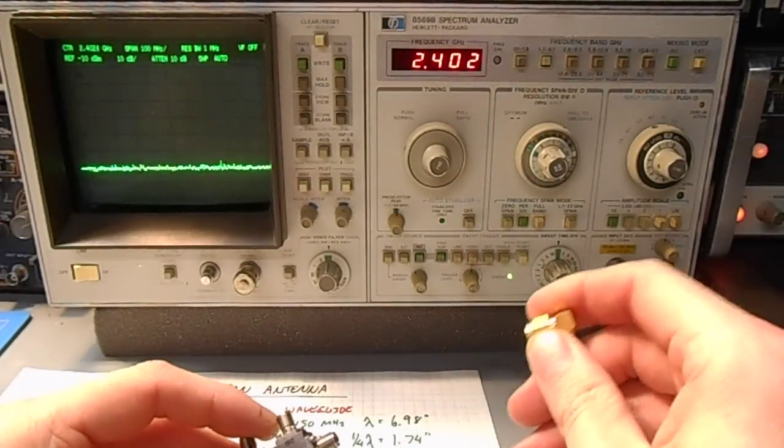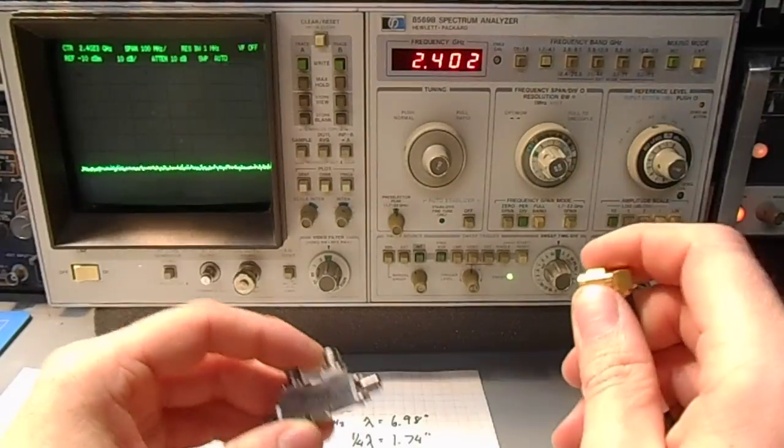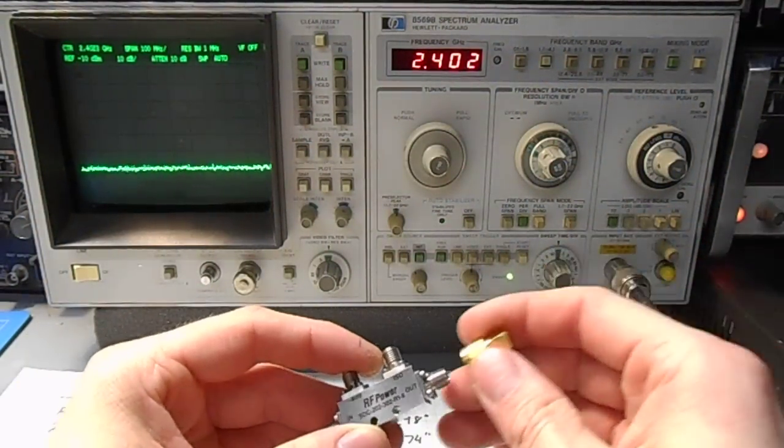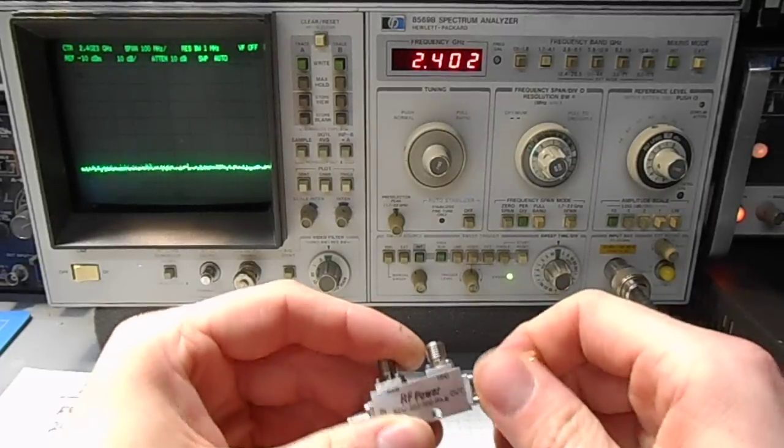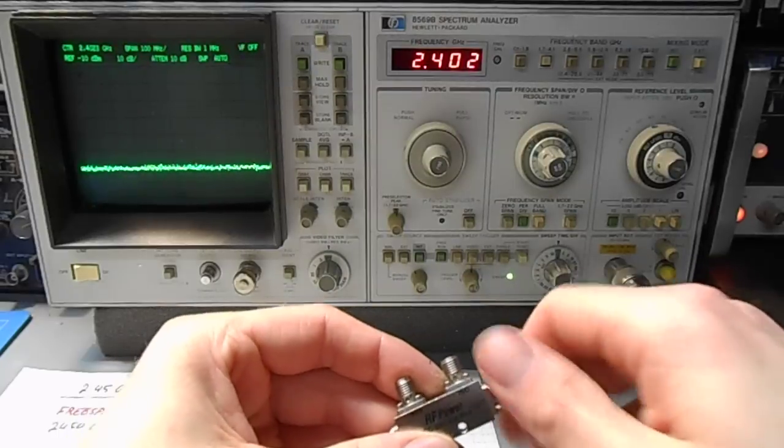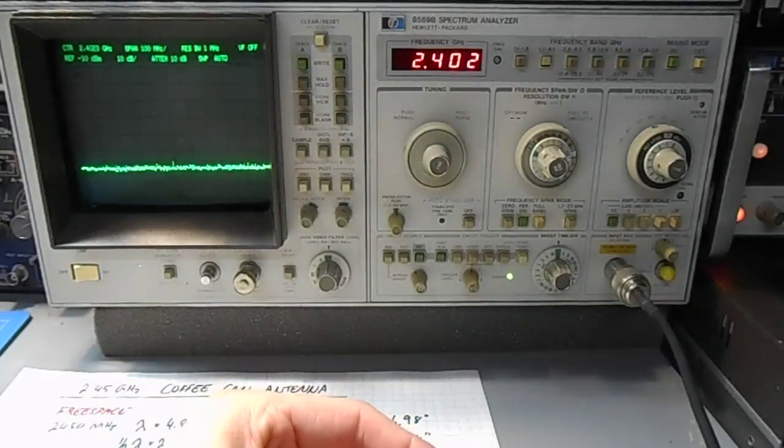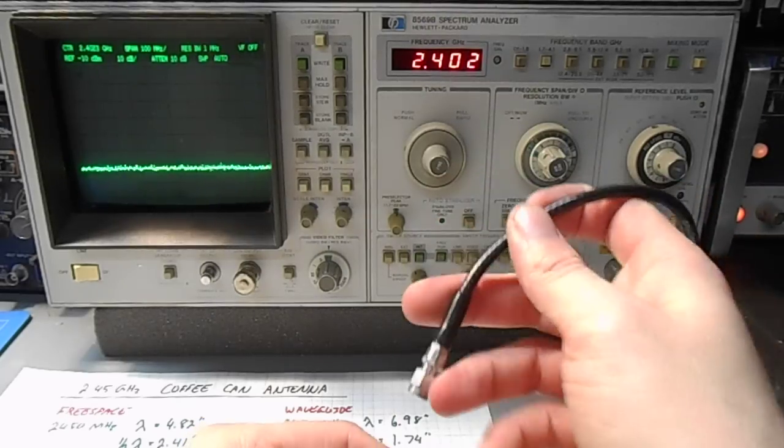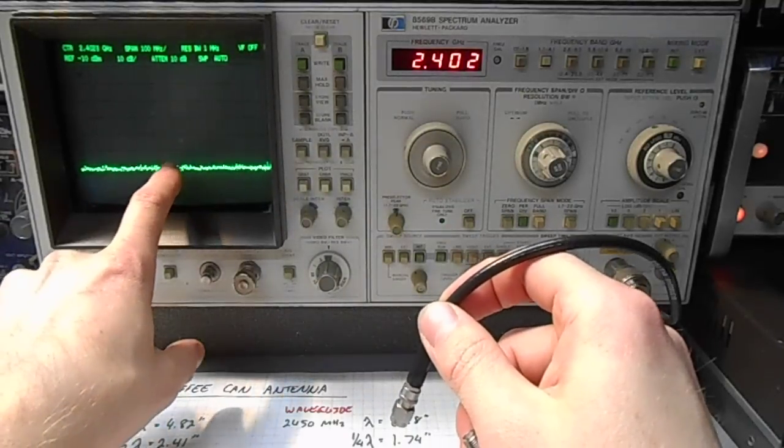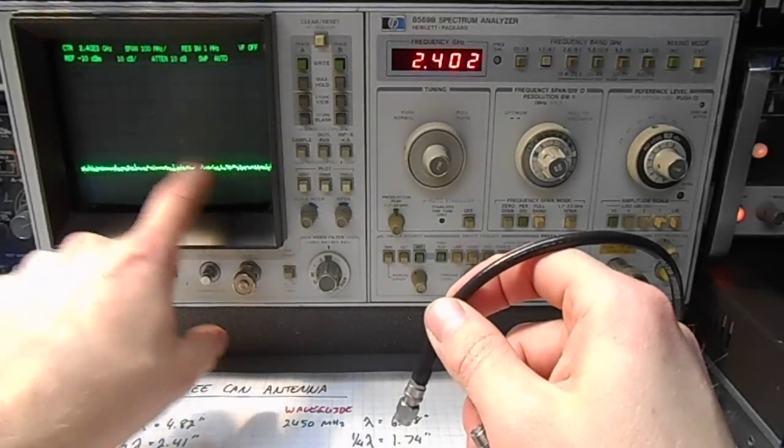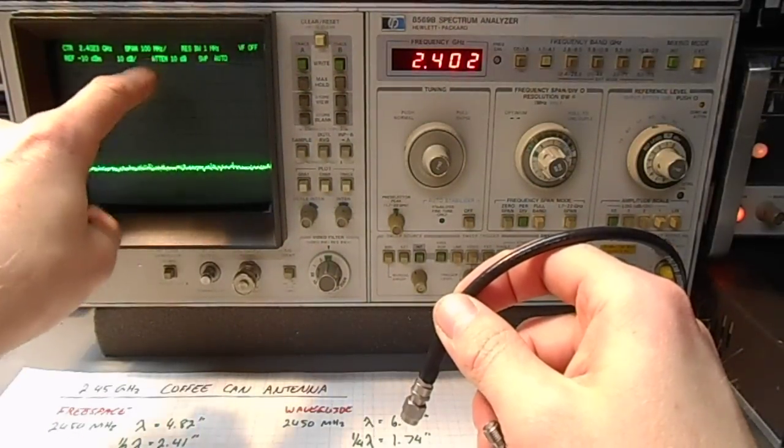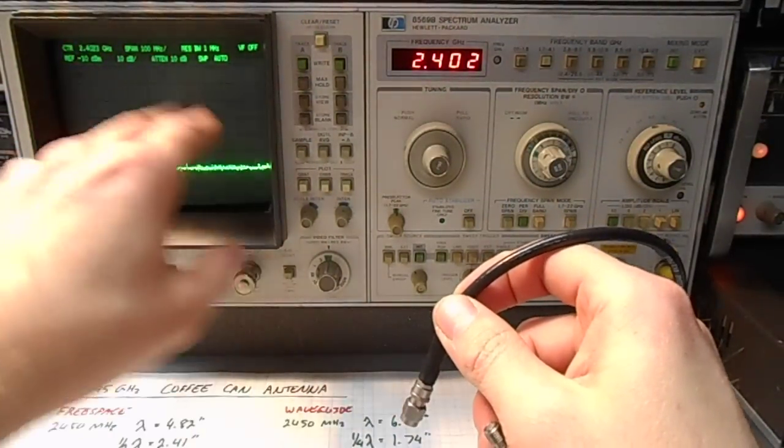I have a signal generator sweeping from 2 to 3 gigahertz at about negative 10 dBm. That's coming in on this cable right here. This will be our input. This cable right here is going to our spectrum analyzer, which I have centered at 2.4 gigahertz with 100 megahertz per division on the span. Our reference level is at negative 10 dBm, and it's 10 dB per division on the vertical.